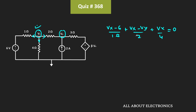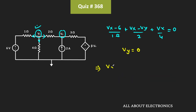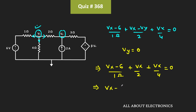Here we are finding the value of β where Vy is equal to zero, so in this equation we will put the value of Vy as zero. Simplifying, we get: (Vx − 6) times 4 plus (Vx − 6) times 4 plus 2Vx plus Vx is equal to zero. If we simplify this equation, the value of Vx will be equal to 24 divided by 7 volts.